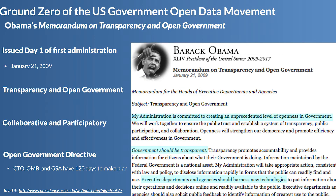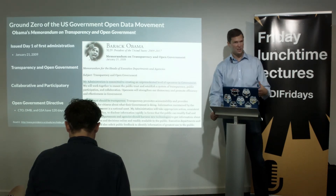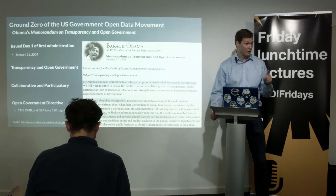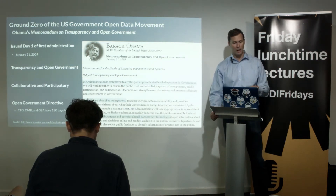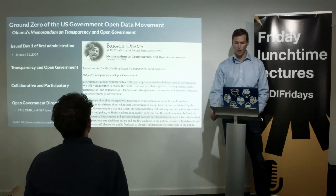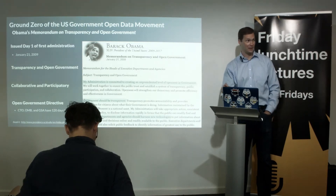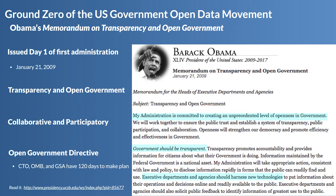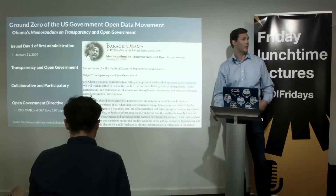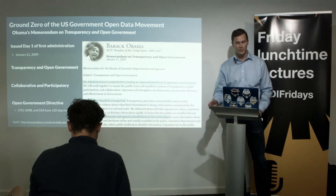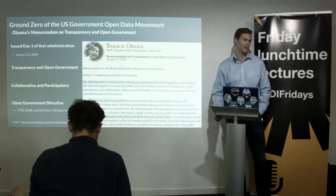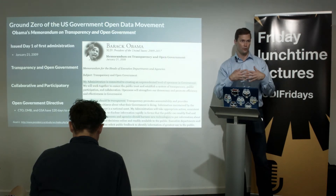The first ground zero of the US government open data movement was Barack Obama. On the very first day of his first term in 2009, he issued a memorandum on transparency and open government. Think about it — you're the new president and on your very first day, the memo you issue is talking about the philosophy of transparency and open government. The opening sentence was: 'My administration is committed to creating an unprecedented level of openness in government.' Government should be transparent, collaborative, and participatory with citizens.